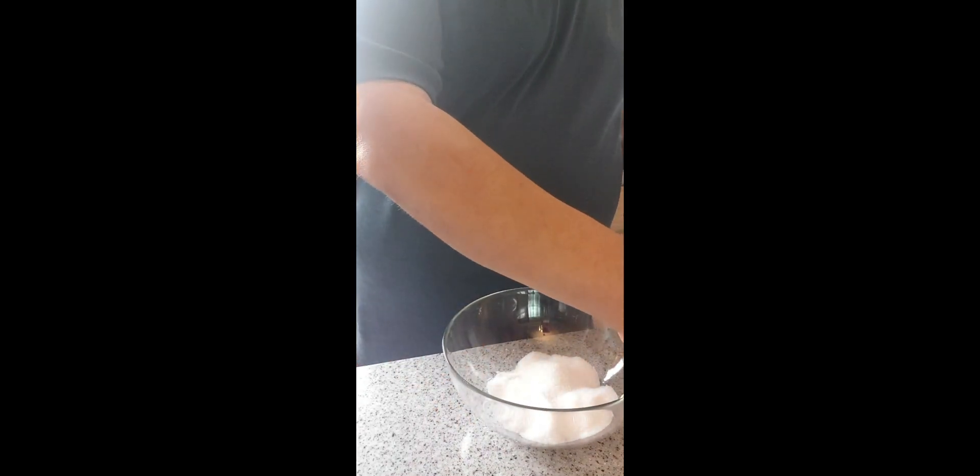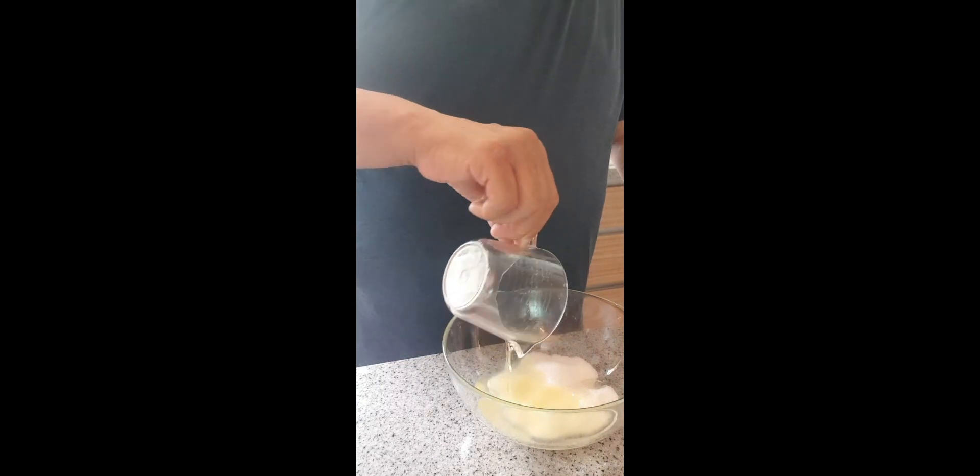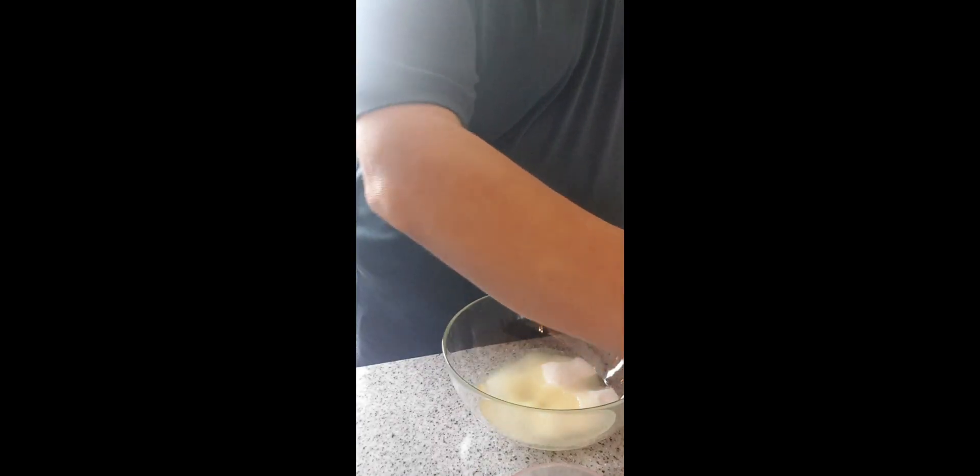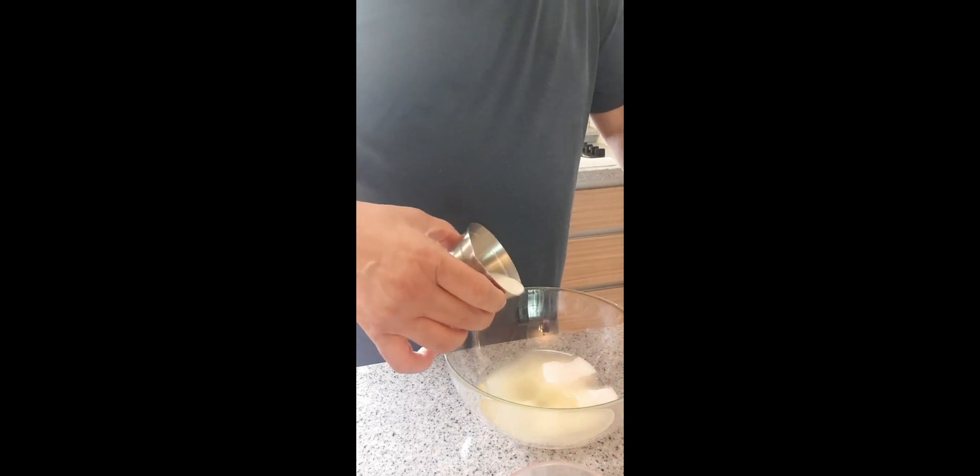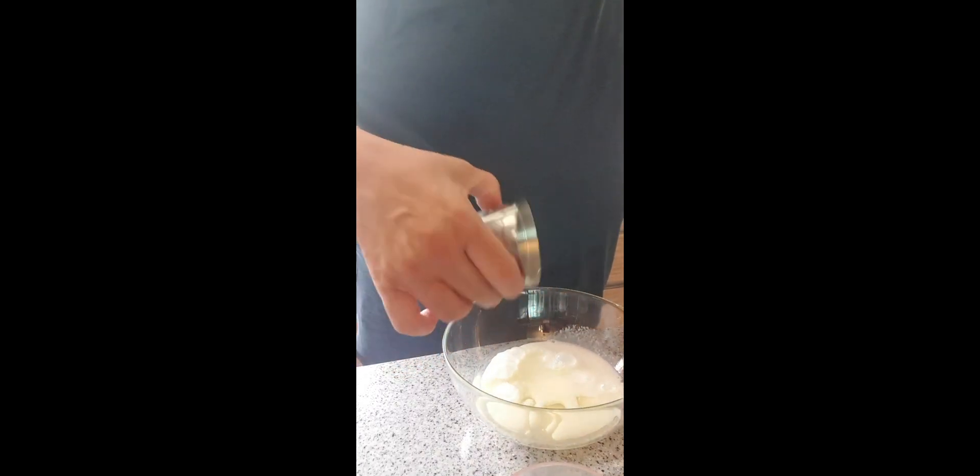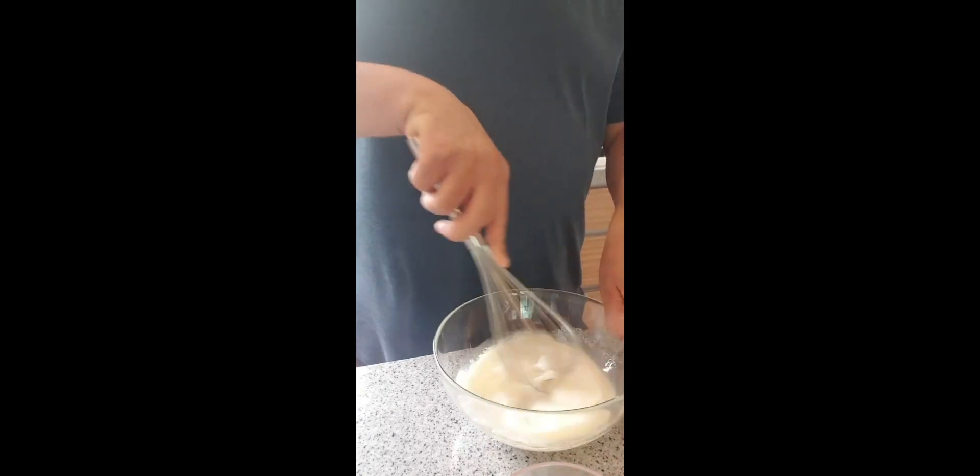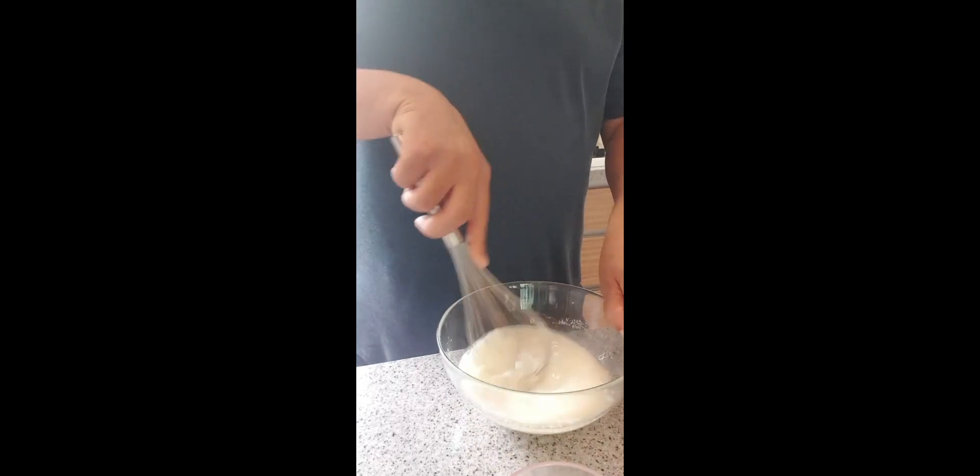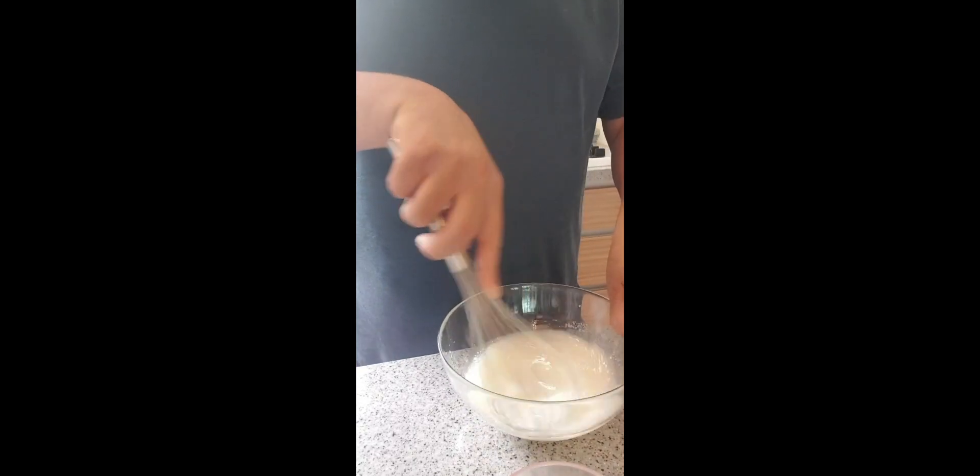So in this bowl we got a three-quarter cup of sugar. We're going to add one-third of a cup of vegetable oil and we're going to add it together.